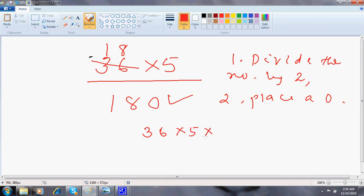What I'm doing is I'm just multiplying and dividing by 2. So the 5 goes off as 10, which is just a 0. This is 18. So it's basically 180.